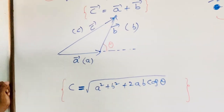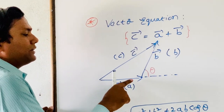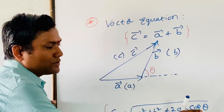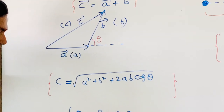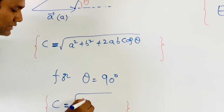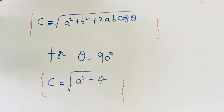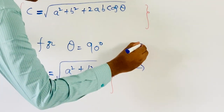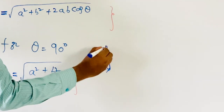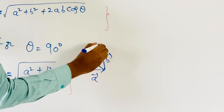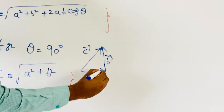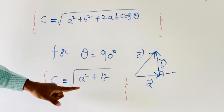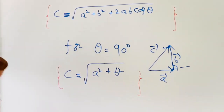Suppose we take theta equal to 90 degrees, meaning Ā is perpendicular to B̄. Substituting theta = 90° gives C = √(A² + B²). The corresponding diagram shows Ā perpendicular to B̄, and the magnitude of C̄ is √(A² + B²).